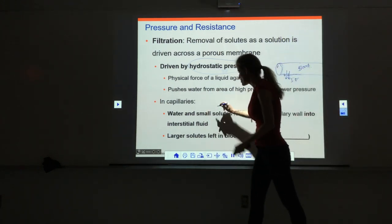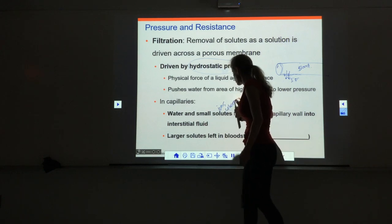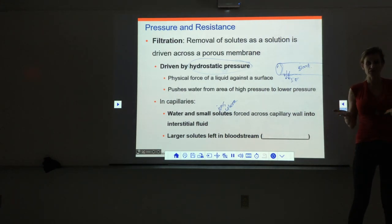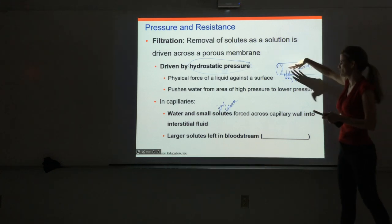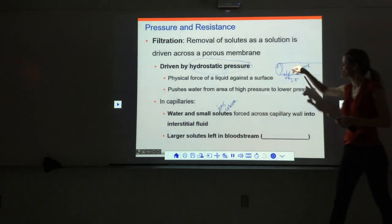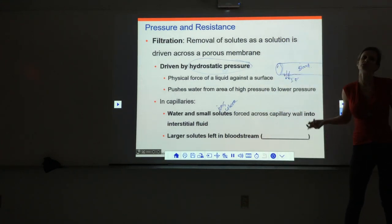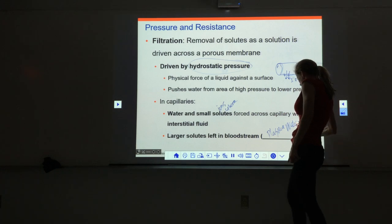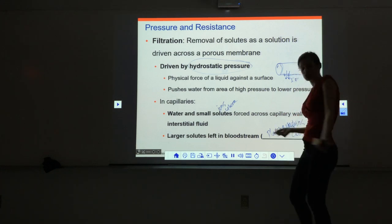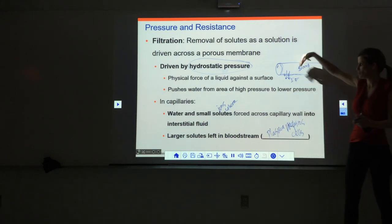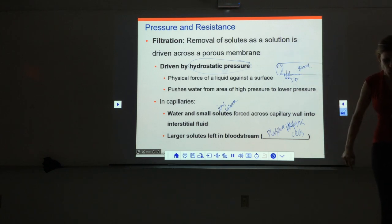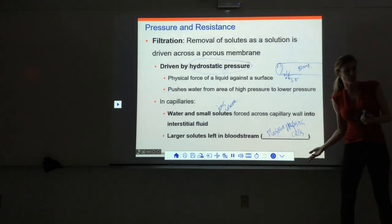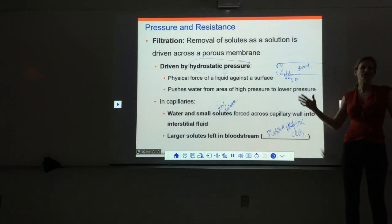Through filtration, water and small solutes like ions and glucose get forced across the capillary wall into the interstitial fluid — they're small enough to fit through the clefts. Larger solutes like plasma proteins and cells are stuck in the blood; they're too big to be pushed out. So filtration pushes out water and small stuff while the really big solutes remain in the bloodstream.